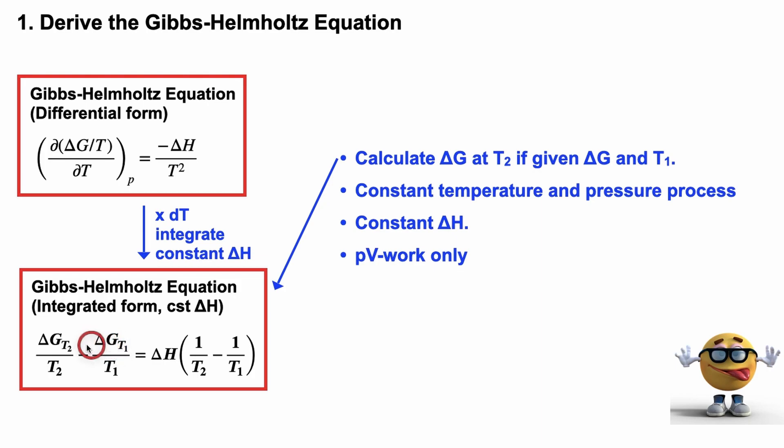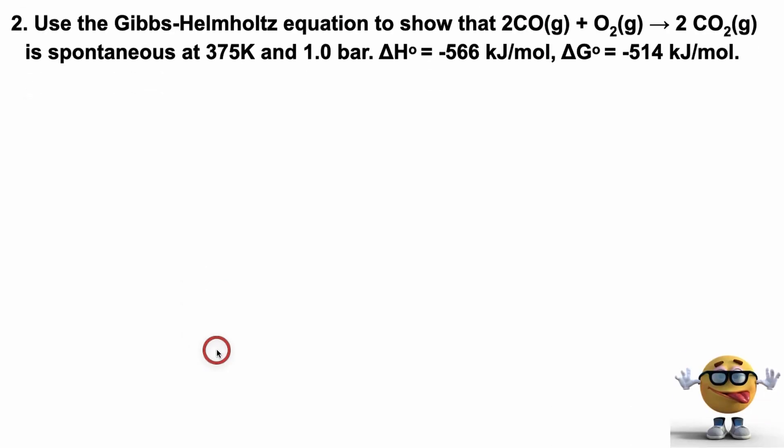If you do that process again, say you do the chemical reaction a second time at a different temperature, there'll be another delta G associated with it. So that's kind of what it represents. We're assuming delta H is constant, so the change in enthalpy and pressure volume work only. Okay, that was a really quick run through of the derivation.